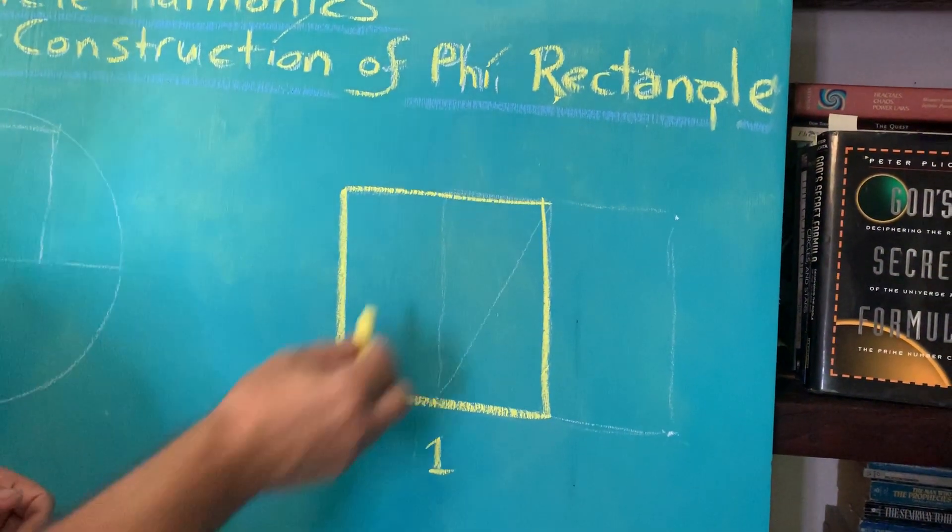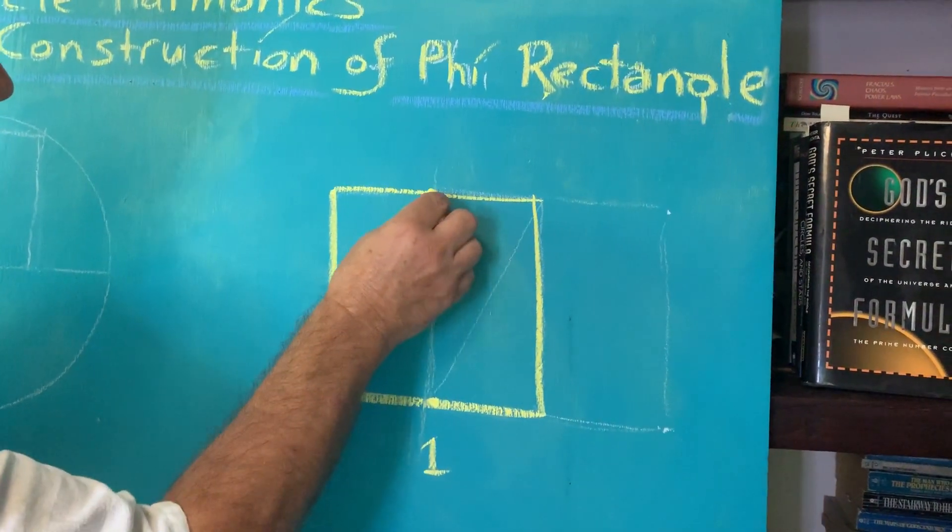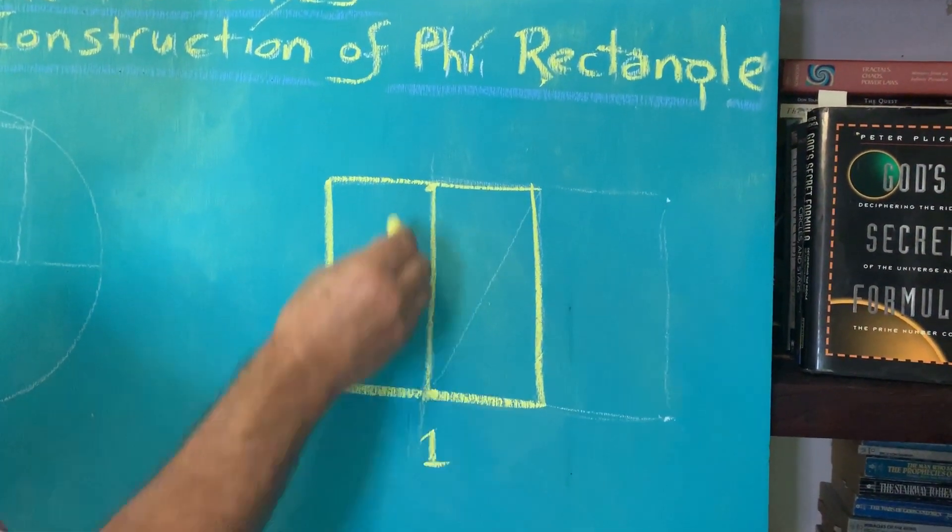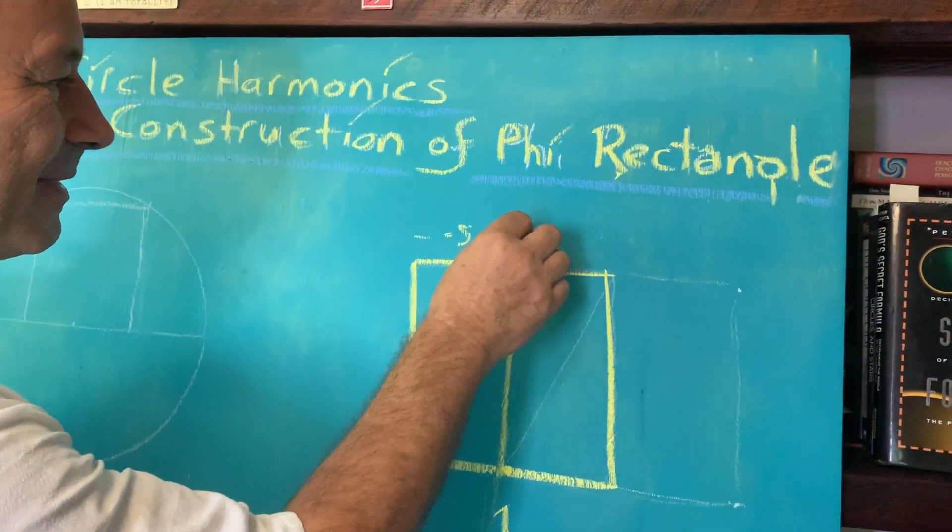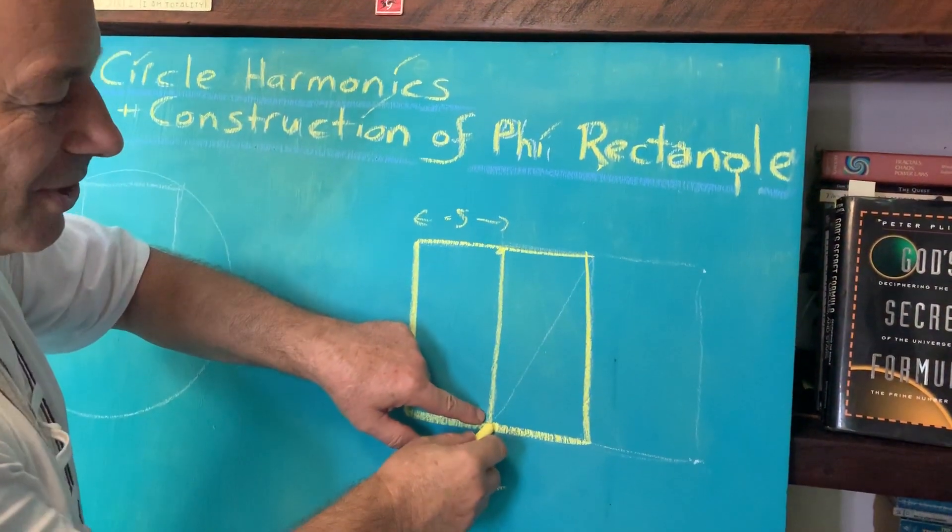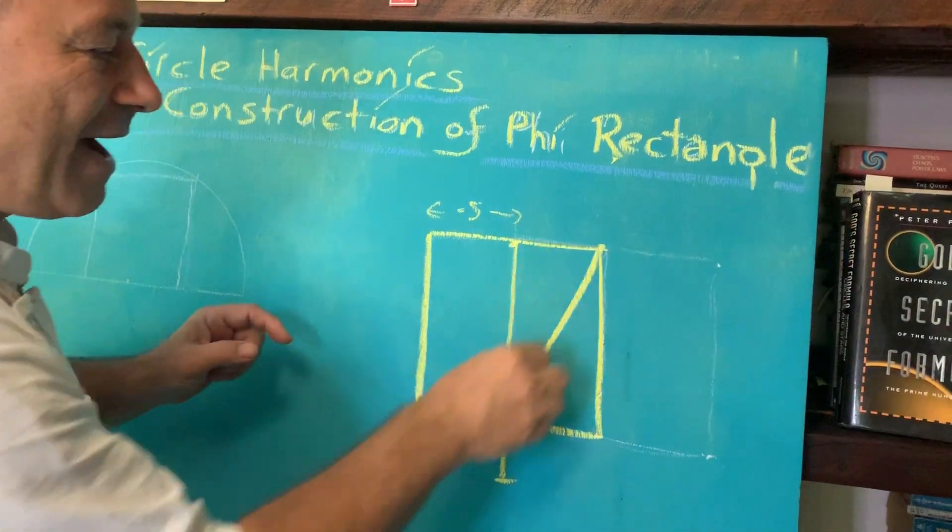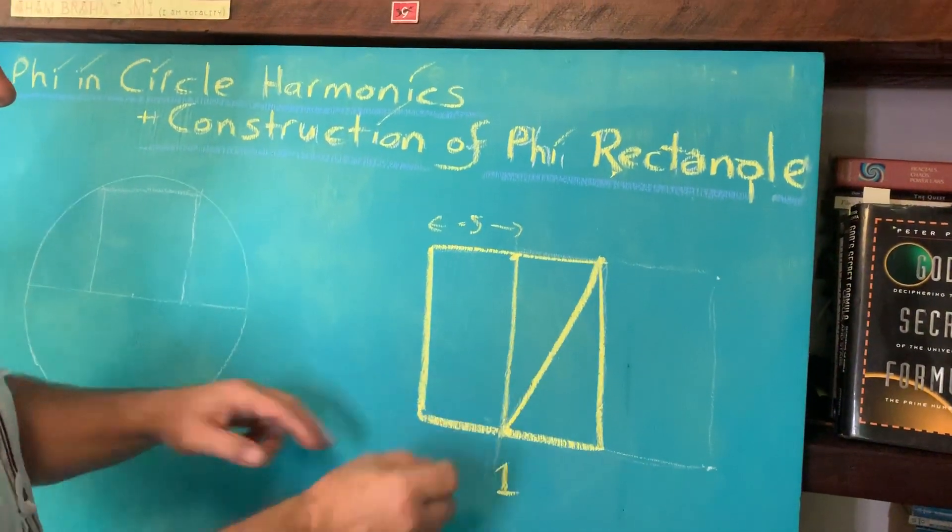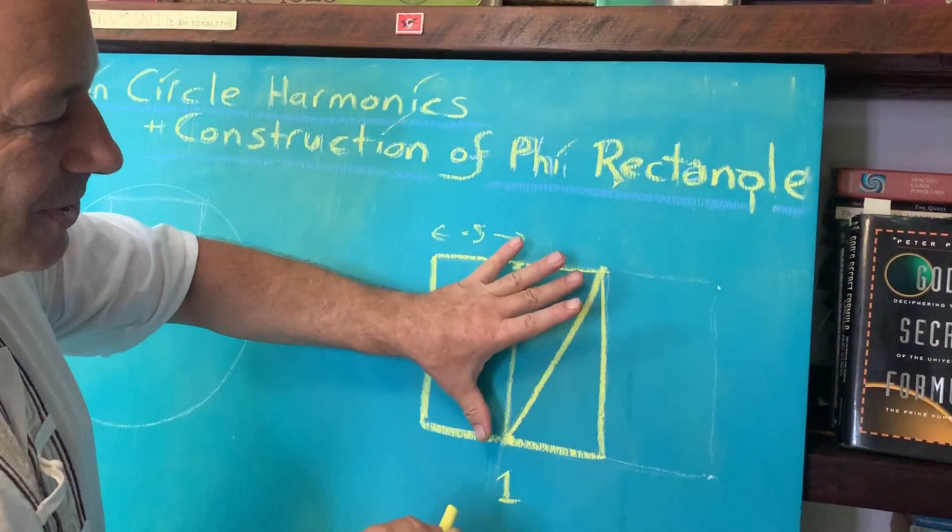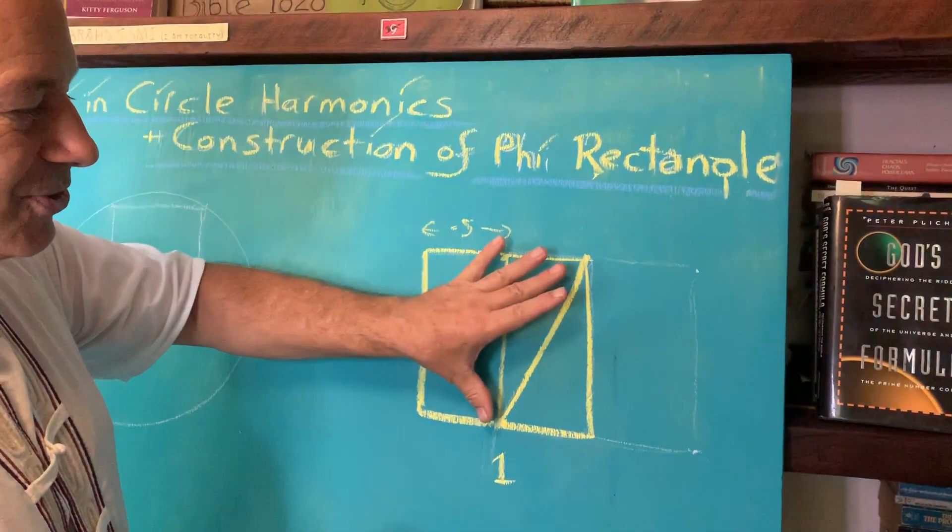We're going to bisect the square, creating a vertical line. That distance here is 0.5. To get the golden rectangle, we look at the diagonal of half the square, which can be measured by Pythagoras' theorem called root 5 on 2.